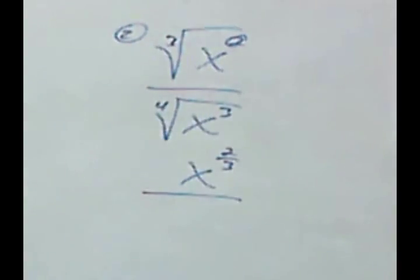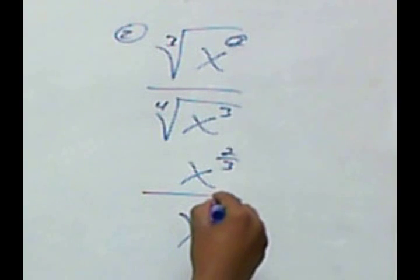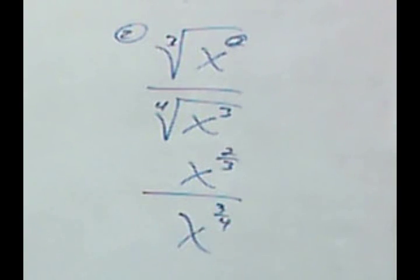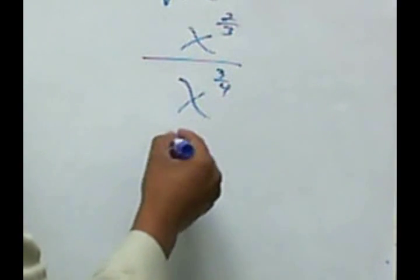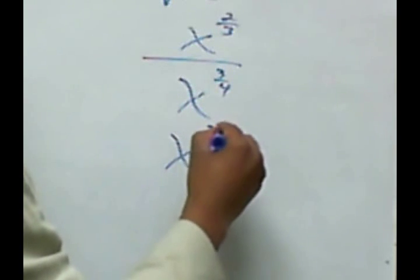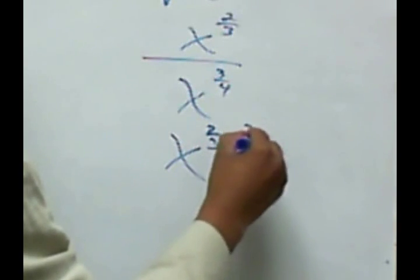Okay, here we have x to the 3/4. And now since we're dividing common bases, we're going to subtract exponents. This would be x to the 2/3 minus 3/4.